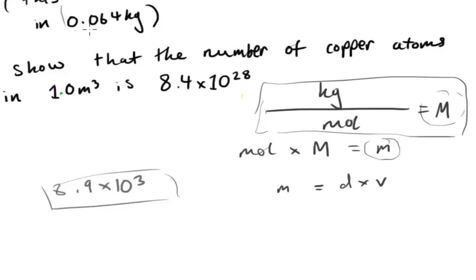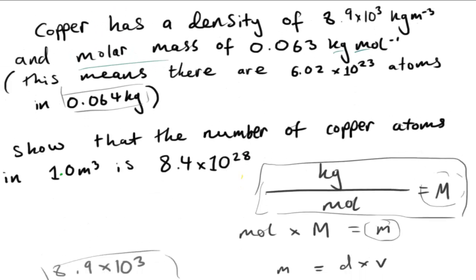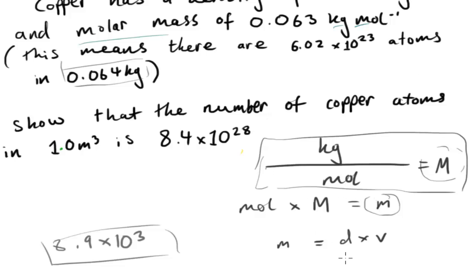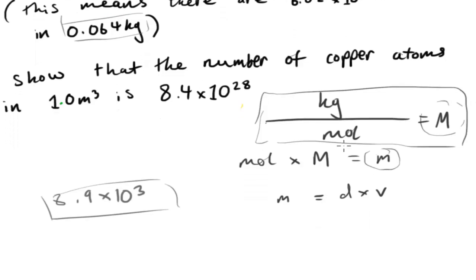We have the molar mass which is here, and we also have the, well, we need to now work out the number of moles. So using, if we rearrange this equation now, moles times molar mass here is equal to the mass. If we rearrange this, the moles is equal to mass divided by molar mass.